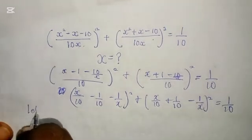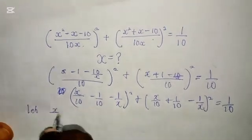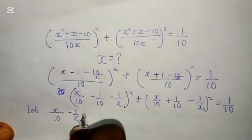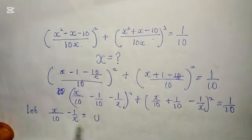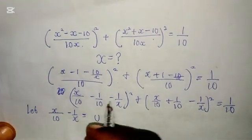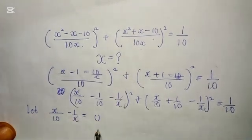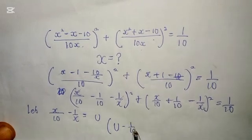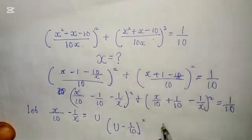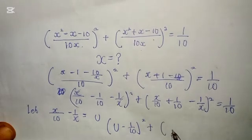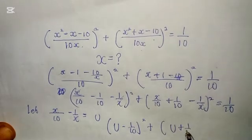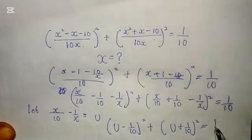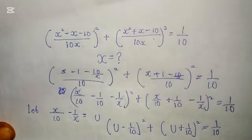Now let x over 10 minus 1 over x be equal to u. When this equals u, these two together we are going to be left with: u minus 1 over 10, all squared, plus u plus 1 over 10, all squared, equals 1 over 10.